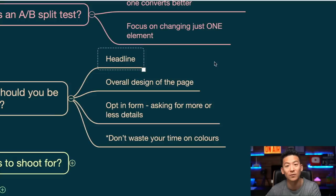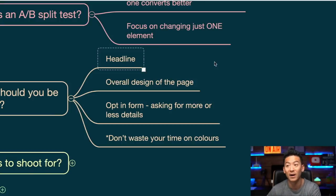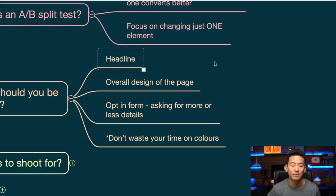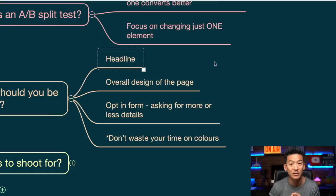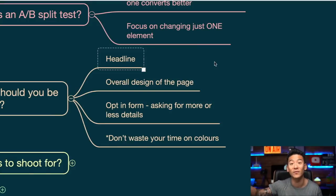You should be shooting for — and it depends on your traffic source, whether you're generating traffic from Facebook ads, organic traffic, SEO, LinkedIn, TikTok, Instagram, Google ads, YouTube — but on average, if you can get over 30%, that's already pretty good. That means 30% of people landing on your page are actually opting in, giving you their name, email address, phone number. If you can get more than 30%, you're doing pretty good. But if you can get over 40% or 50%, that's really, really good, and that's what you should be aiming for.